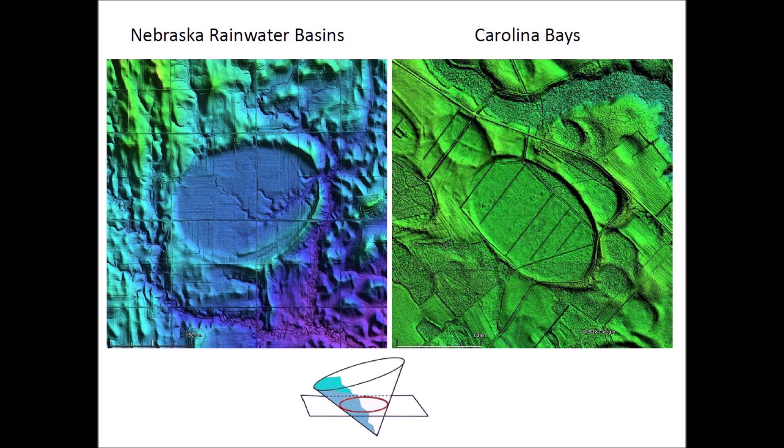The fact that ellipses are conic sections implies that these geological features originated as inclined conical cavities. The width-to-length ratios of the ellipses can be used to calculate the inclination of the original conical cavities. The Glacier Ice Impact Hypothesis proposes that an extraterrestrial impact on the Laurentide Ice Sheet during the Ice Age ejected ice boulders, and that the secondary impacts of these ice boulders created the inclined conical cavities that produce the elliptical features in Nebraska and the East Coast.